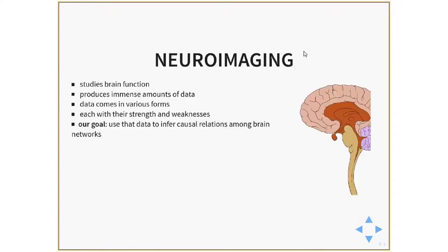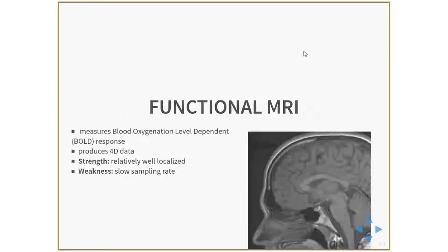Some definitions. We're working with neuroimaging — a study of brain function that produces immense amounts of data. Data comes in various forms called modalities, each with its own strengths and weaknesses. Our goal is to use that data to infer causal relationships among brain networks, though we'll be happy with any useful relationships. Causal seems to be the ultimate goal.